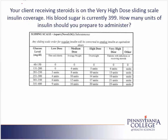We are doing a dosing problem. Let's take a moment to read the problem. Your client receiving steroids is on the very high dose sliding scale insulin coverage. His blood sugar is currently 399. How many units of insulin should you prepare to administer?